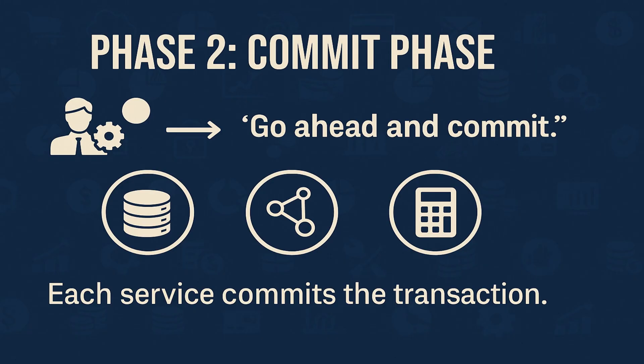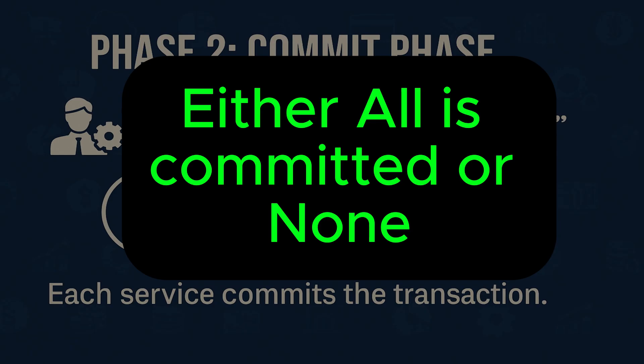If all services respond with yes, the coordinator sends the final command: go ahead and commit. At this point each service commits the transaction. In this way either everything is committed or nothing is — that's the idea behind atomicity in distributed systems.